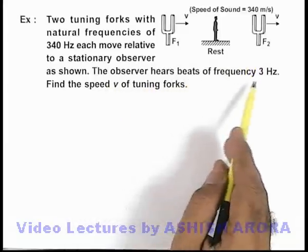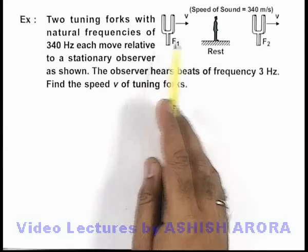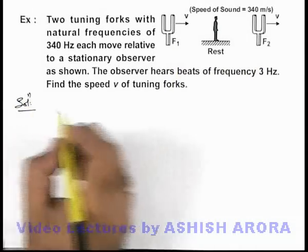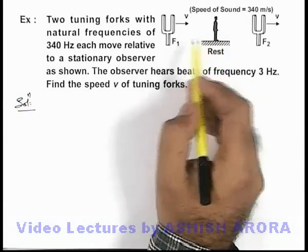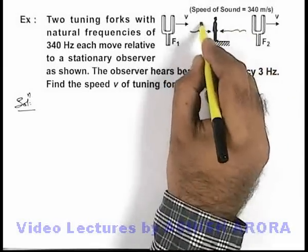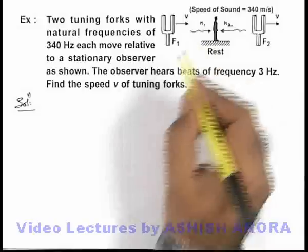The observer has beat frequency 3 hertz. Find the speed v of the tuning forks. Now in this situation, the observer will hear beats because due to the two forks the sound which is approaching will have different frequencies n1 and n2.